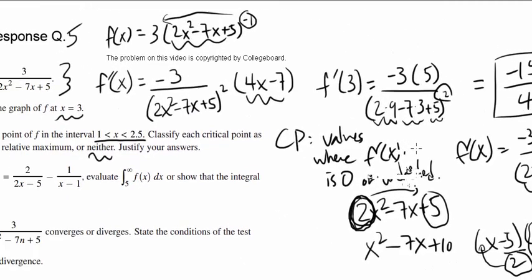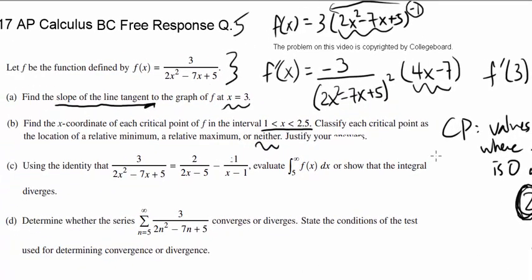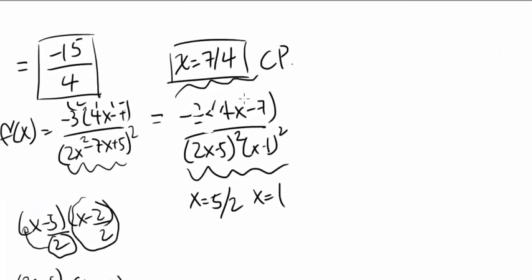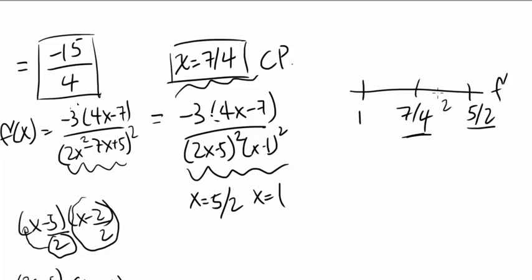What they want us to do with the critical point is determine whether it's relative minimum, maximum, or neither. Let's see how the sign of f prime is changing from the immediate left of 7 over 4 and immediate right of 7 over 4. We also got 1 and 5 over 2. Let's start by plugging in a value between 7 over 4 and 5 over 2, which is 2. The bottom is always positive, so we don't have to worry about it. Plugging 2 into the top, 8 minus 7 is positive 1. Negative 3 times positive 1 is negative. So f prime is negative to the right of 7 over 4.